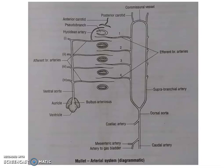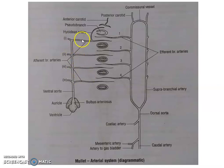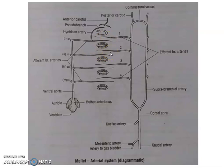Beyond the bulbus arteriosus, the ventral aorta gives out four pairs of afferent branchial arteries. The ventral aorta moves forward through the ventral part of the pharyngeal region and gives off four pairs of afferent branchial arteries. These arteries move along the floor, bend up toward the lateral sides, and reach the gills on both sides, innervating them. When blood passes through the gills, gaseous exchange takes place.